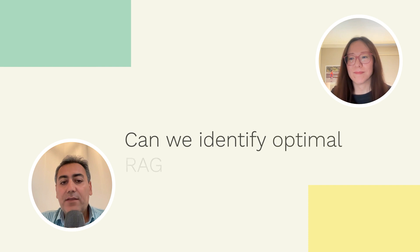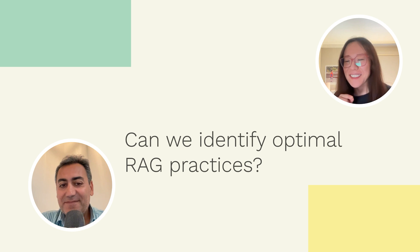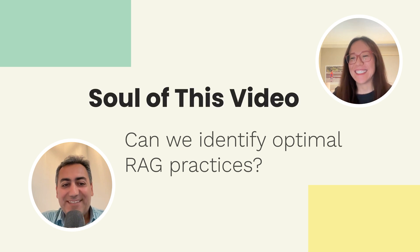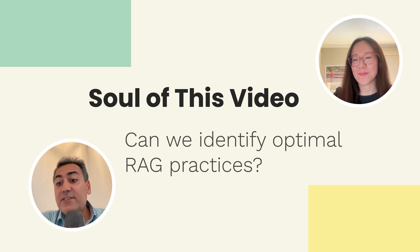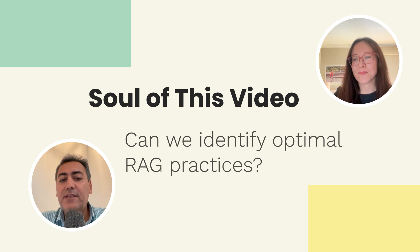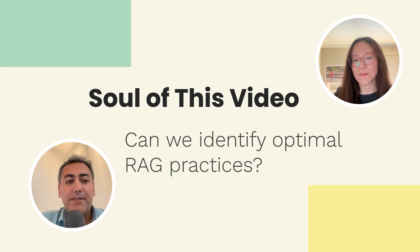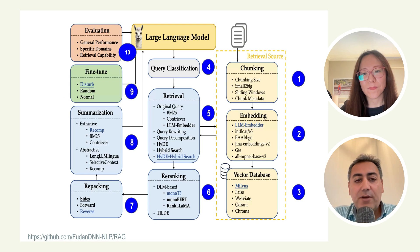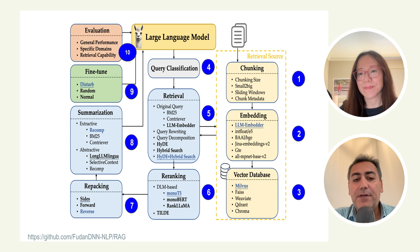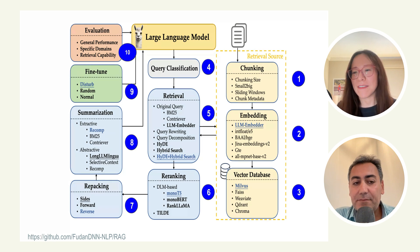We know that the RAG workflow involves several different steps, and each step involves a lot of sub-tasks with so many techniques for each one. That's why it makes it very difficult and complex. The question this paper was trying to answer is: can we identify optimal RAG practices? They are introducing best practices recommendations, though you don't necessarily need to follow all of them since it's based on their experiments. But it's a good roadmap. This picture shows all the different components and modules they experimented with, and we are going to cover all of these.